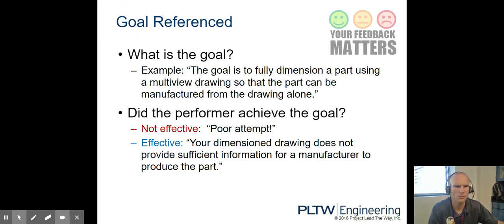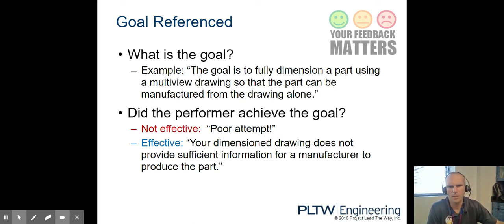We're going to learn a lot about multi-view drawings coming up here shortly in this class. Did the performer achieve the goal? This is a not effective form of feedback: 'poor attempt.' Effective would be to say your dimensioned drawing does not provide sufficient information for a manufacturer to produce the part.